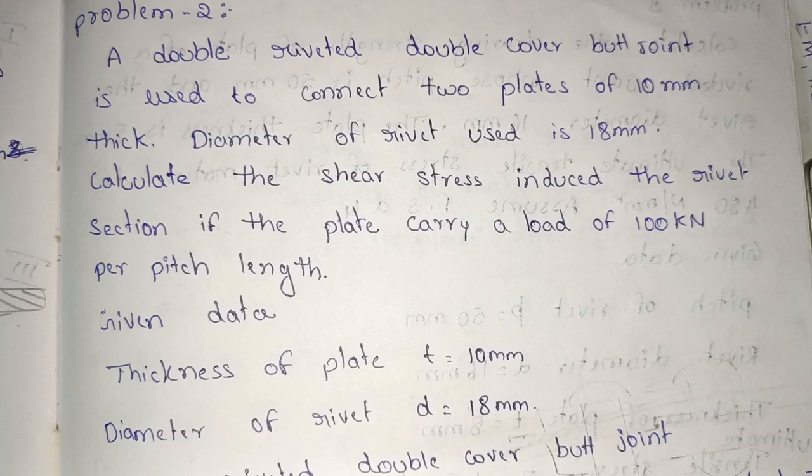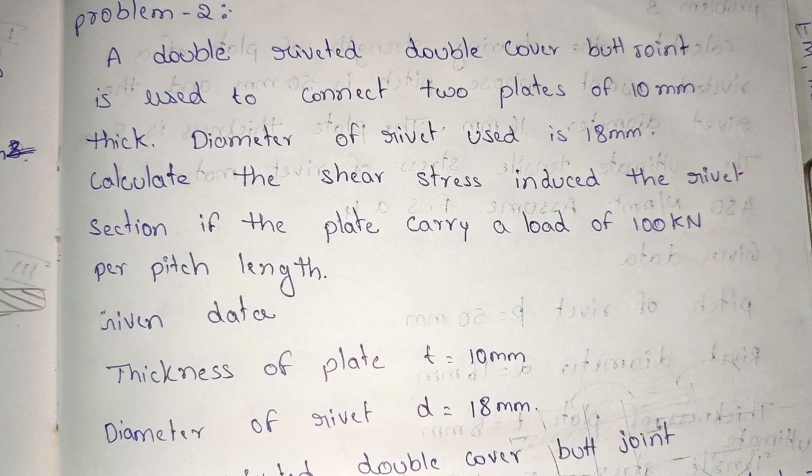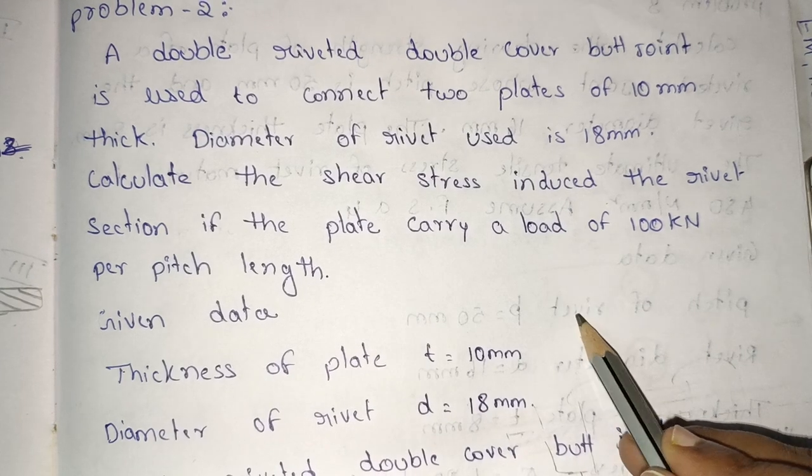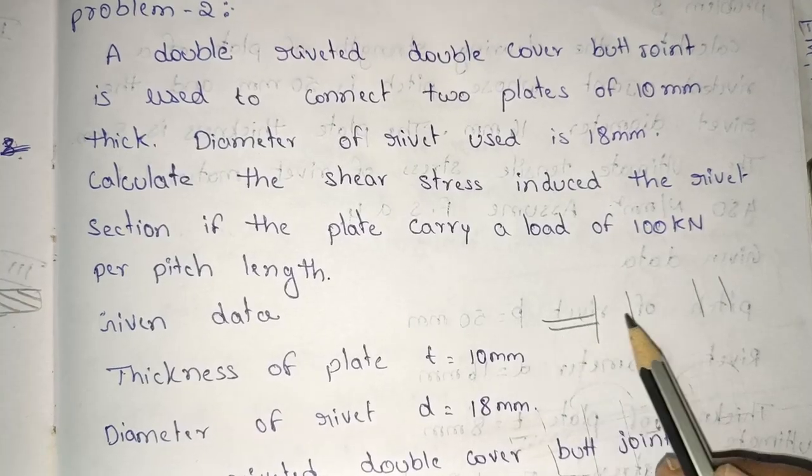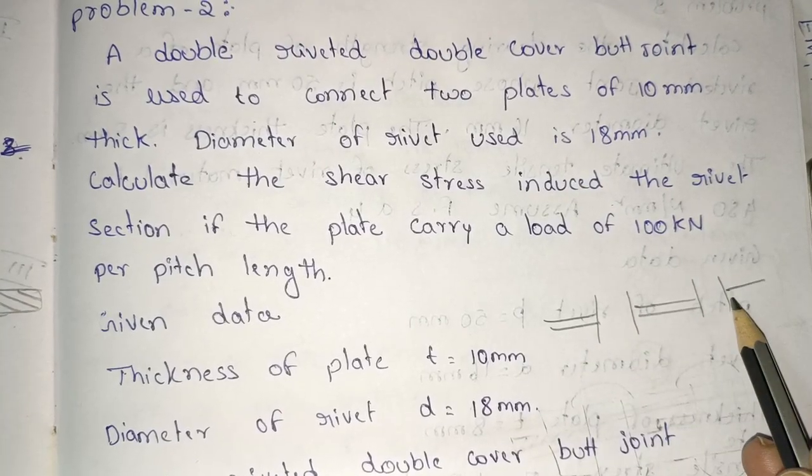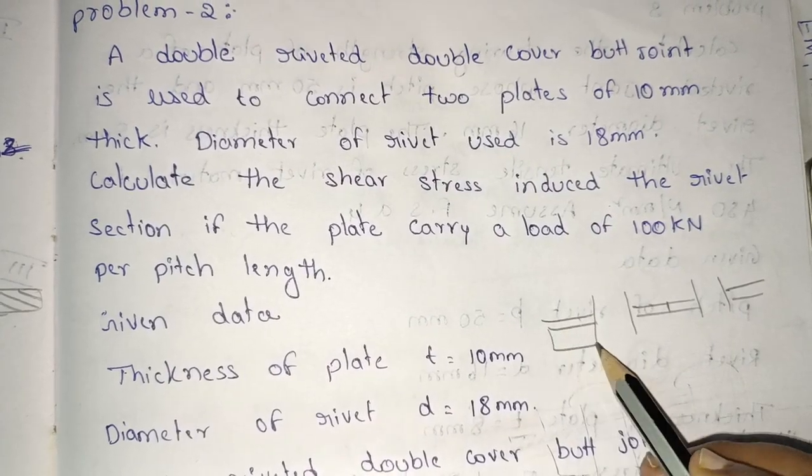So here we have a double riveted double cover butt joint. The butt joint is used to connect two plates. There are two covers and these are the rivets, okay?